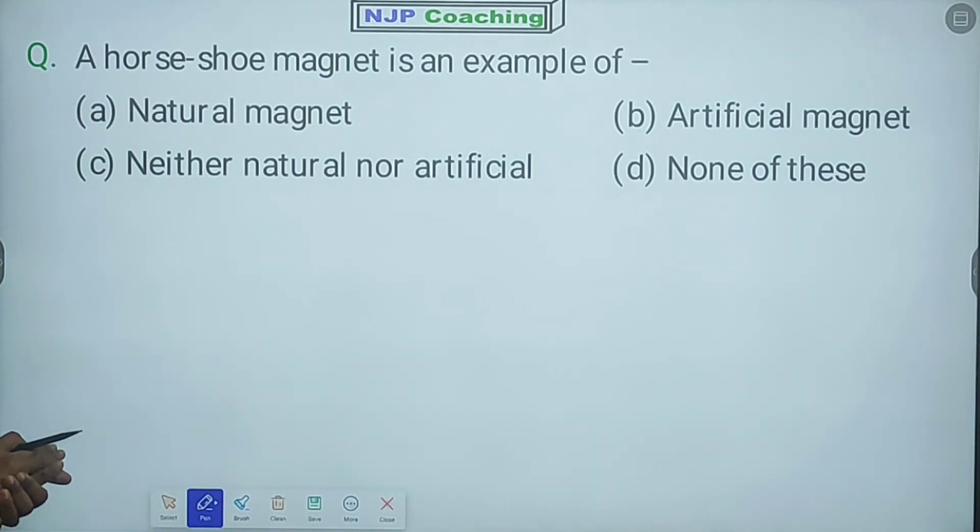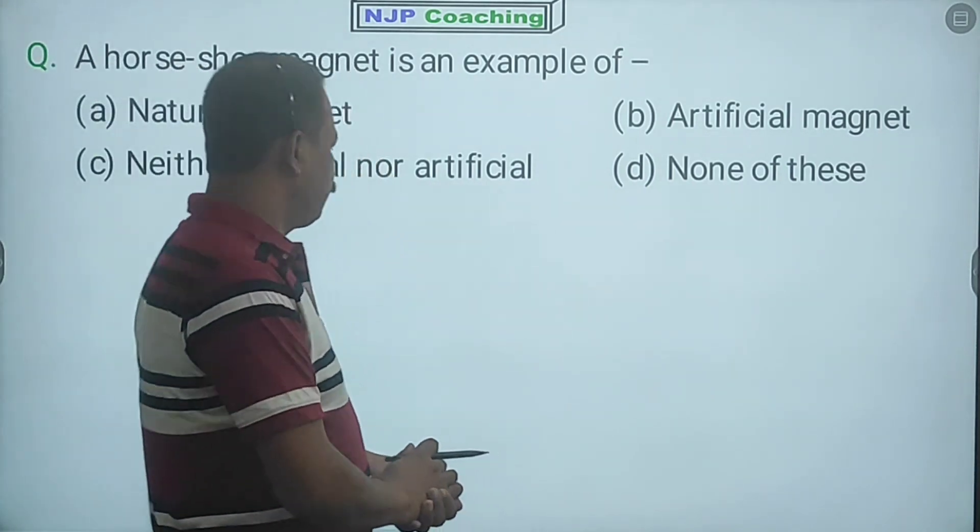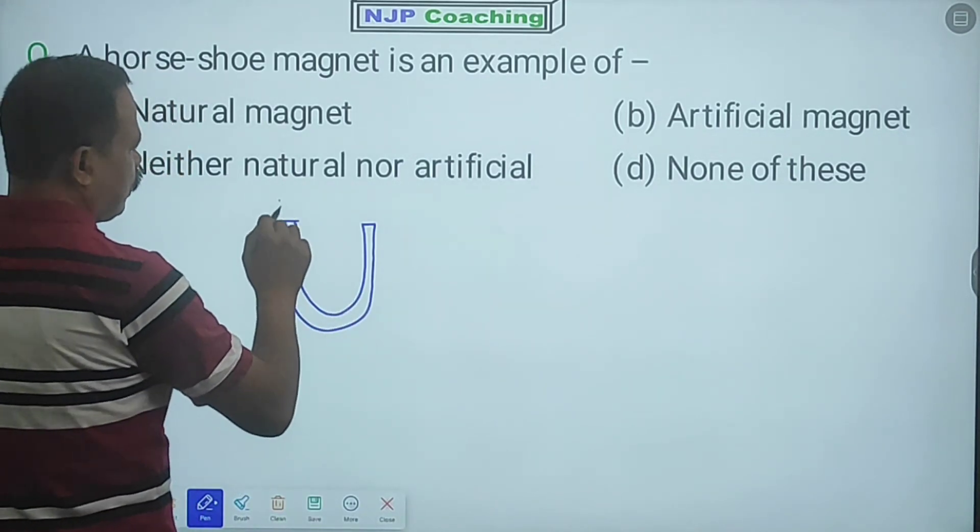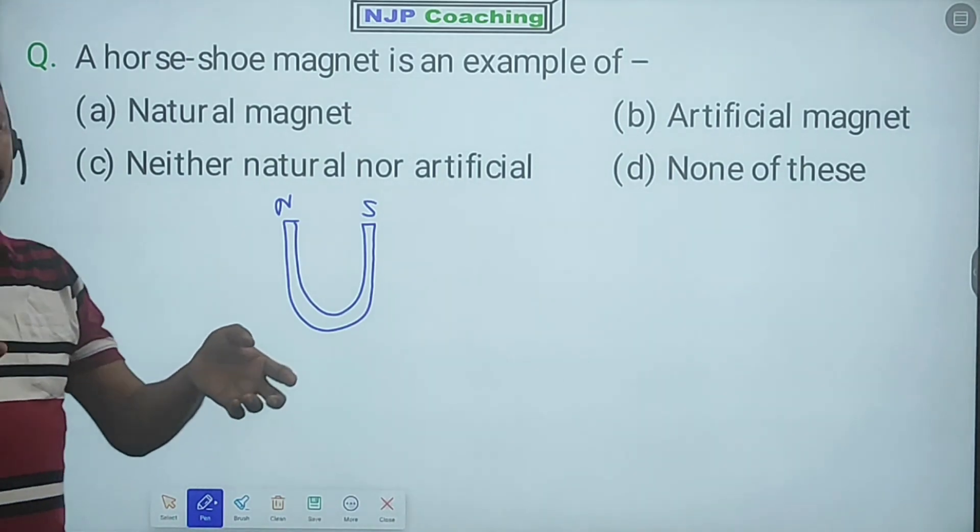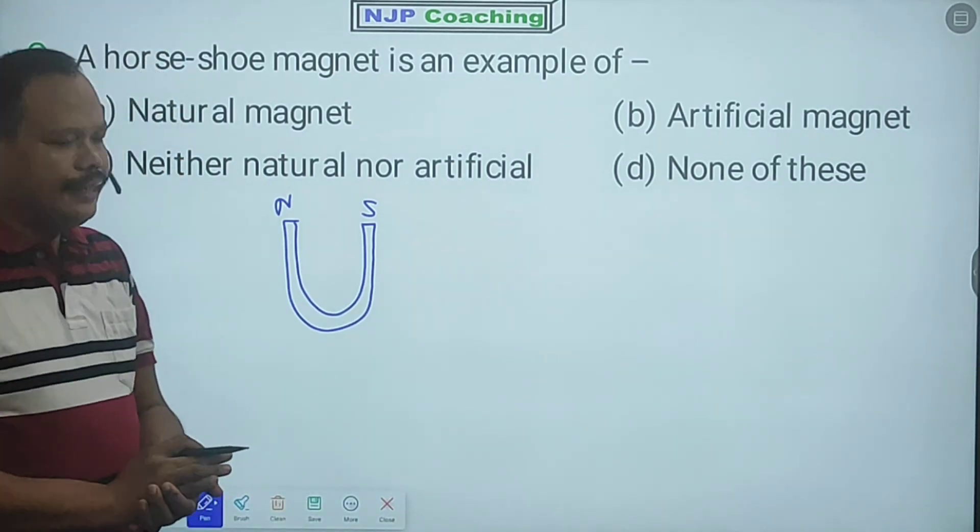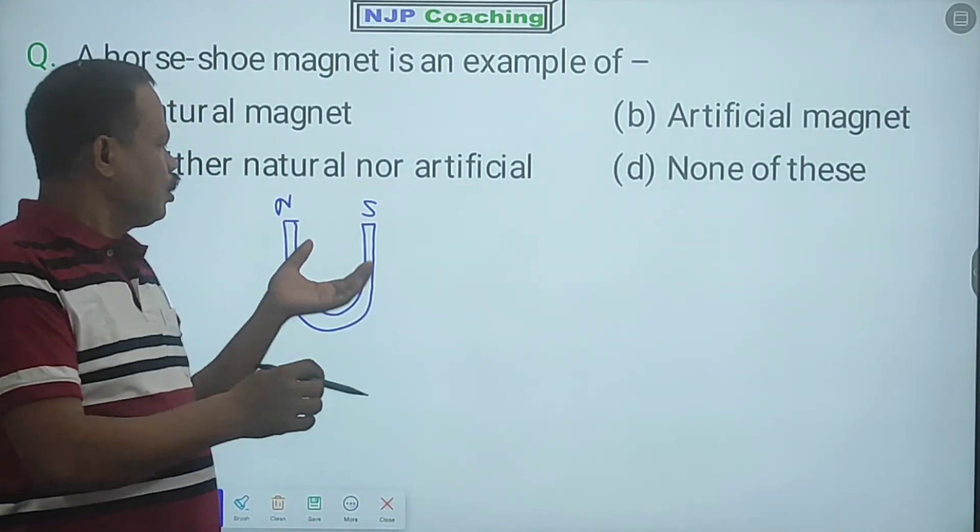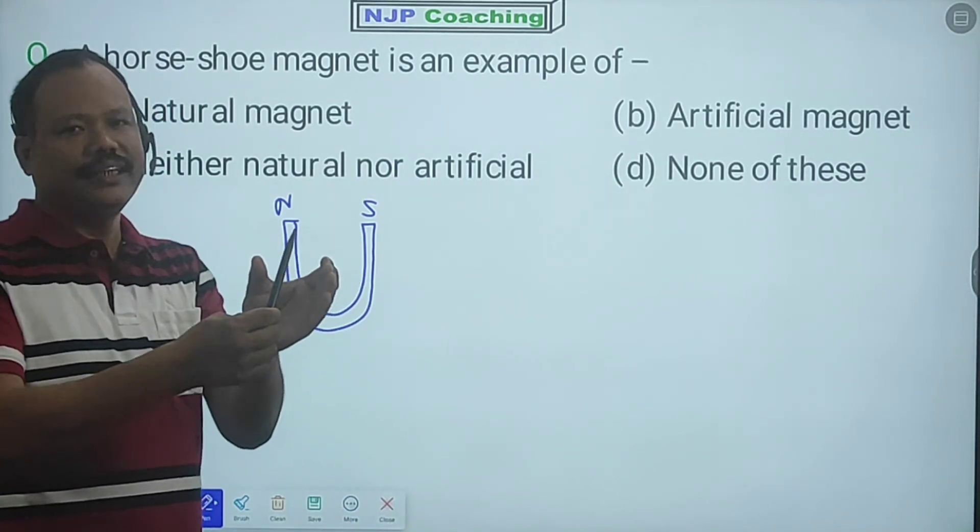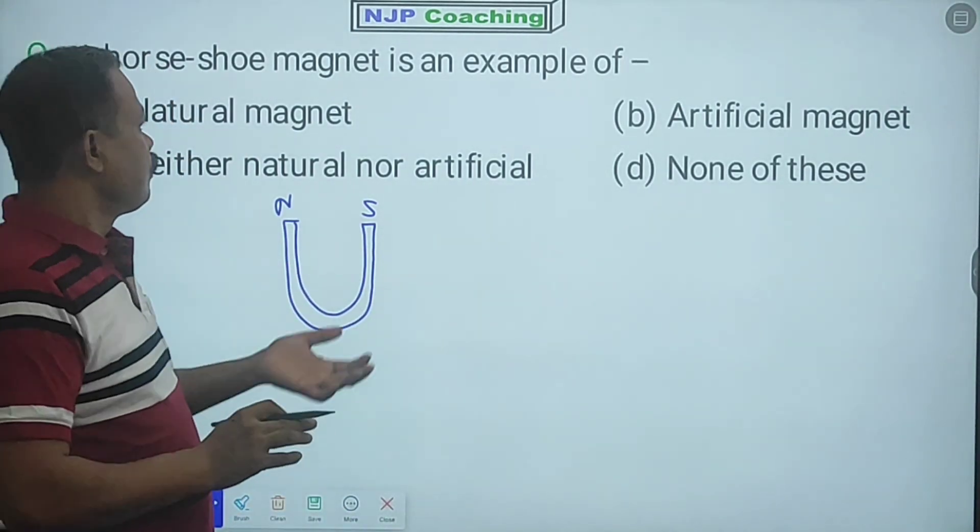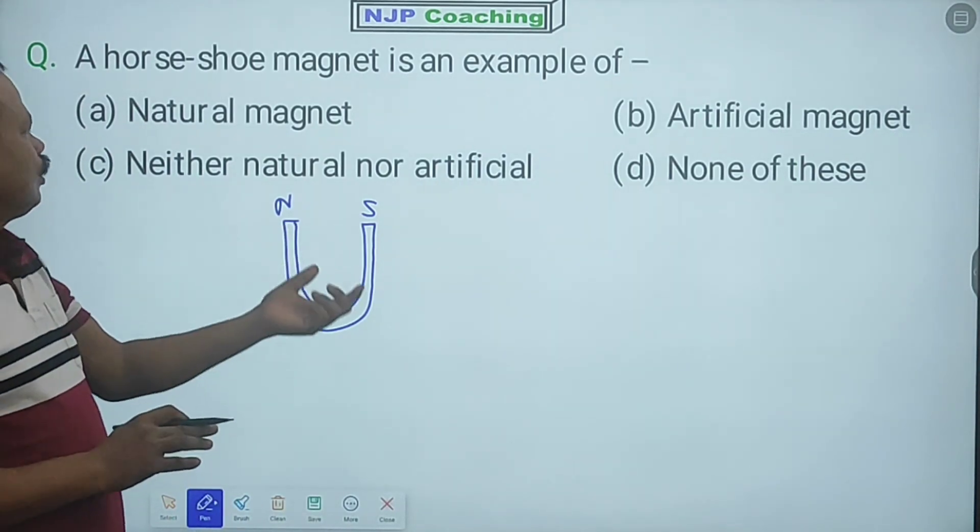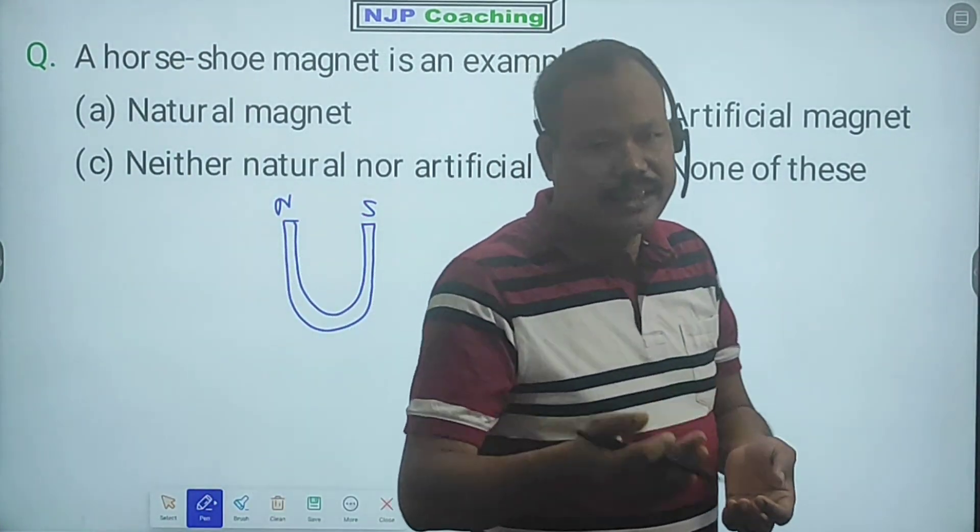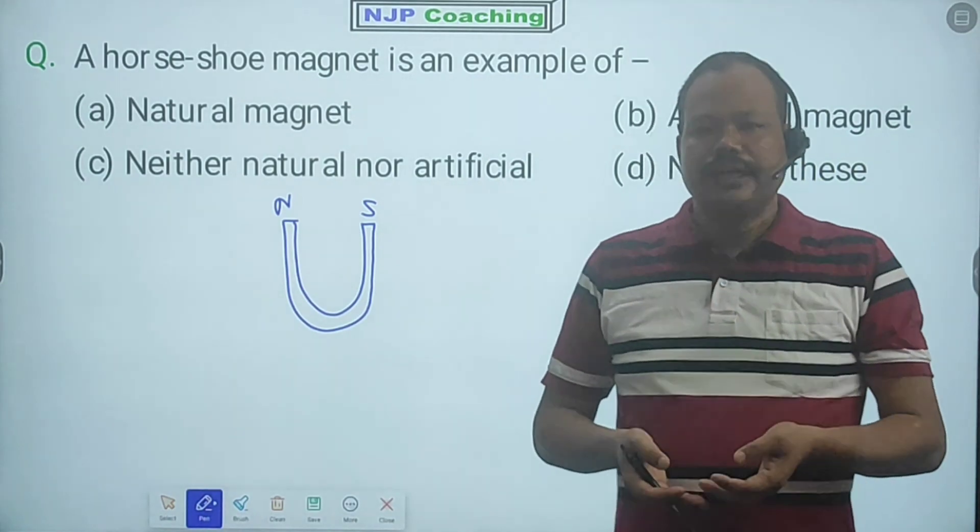A horseshoe magnet is an example of? Horseshoe magnet - it's made of magnetized iron metal. So artificial magnets are magnets which can be magnetized by using another magnet, which is artificial magnet. Okay.